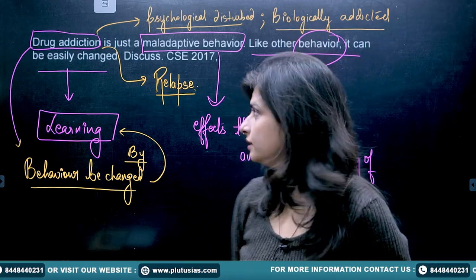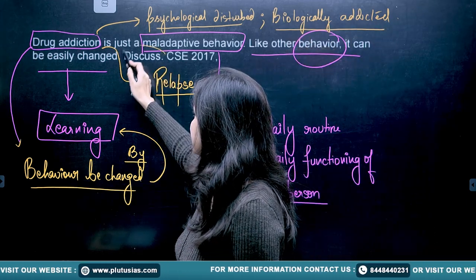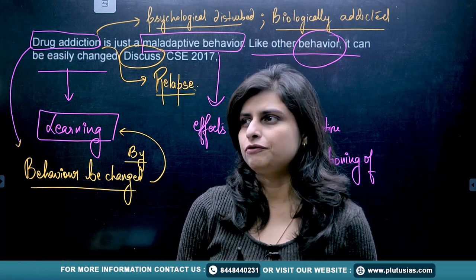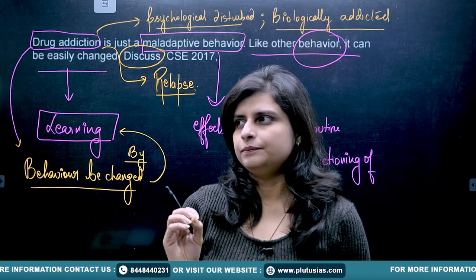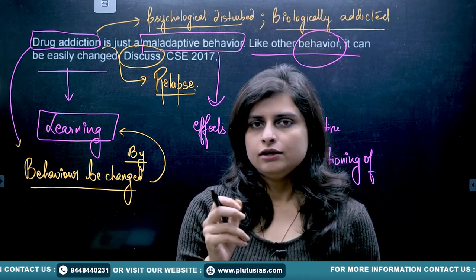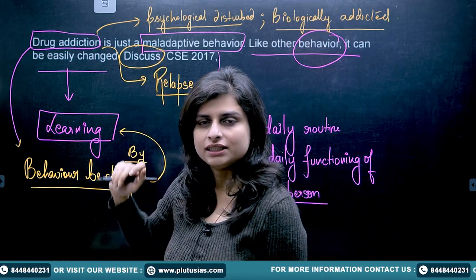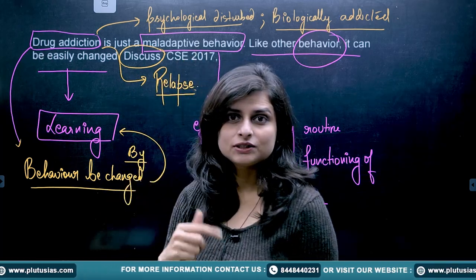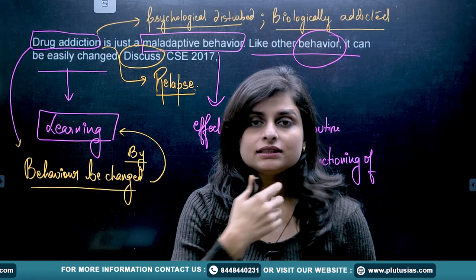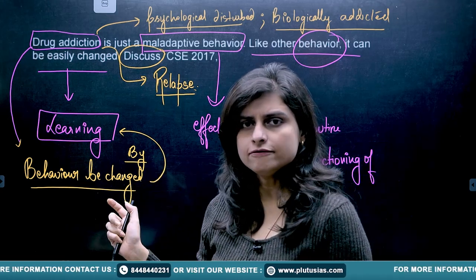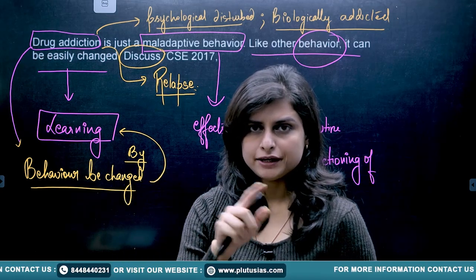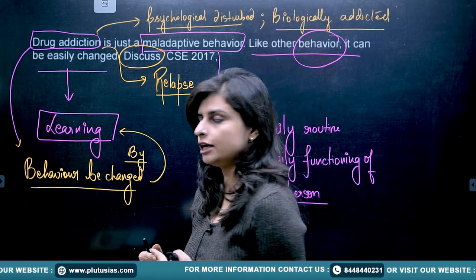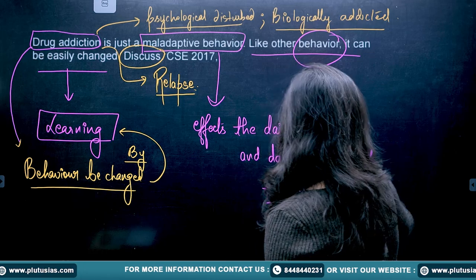The question asks you to discuss the various ways drug addiction is affecting the body — biological addiction, psychological disturbance, and relapse. Then you have to tell whether, if you want to change this behavior of drug addiction through learning, it is possible or not, and what the ways are.